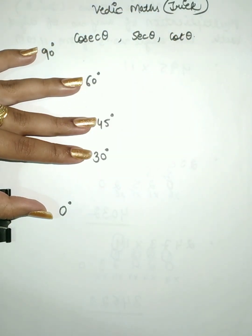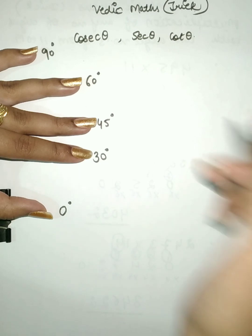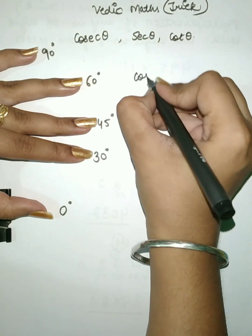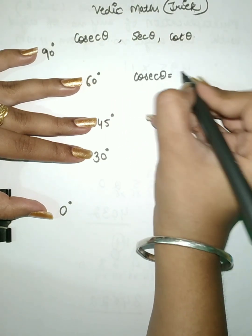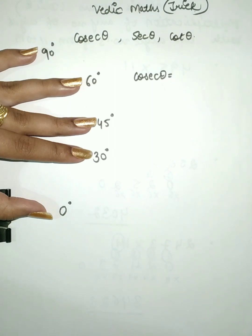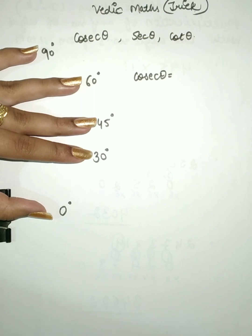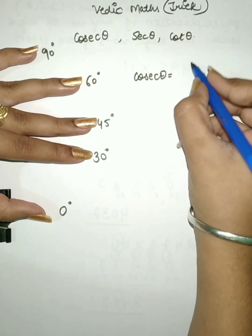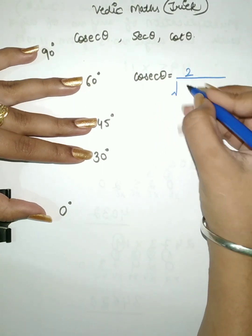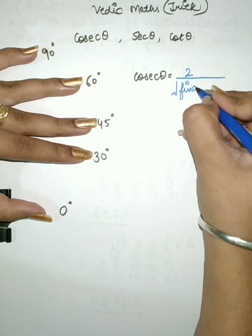First we have to remember the formulas for finding the values of cosecant theta, secant theta and cot theta. Cosecant theta is the reciprocal of sin theta, and sin theta has the formula root of fingers below divided by 2. So by doing the reciprocal of sin theta we get cosecant theta, which will be equal to 2 divided by root of fingers below.